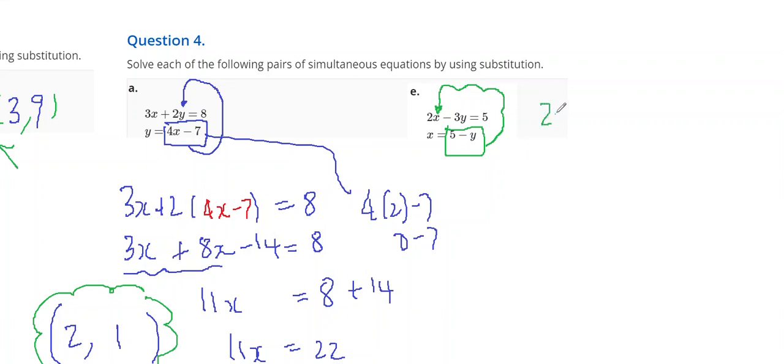So, the first equation becomes 2x minus 3 lots of equals 5. I've got 2 lots of minus 3y equals 5. And instead of writing the x, I'm going to write 5 minus y instead.